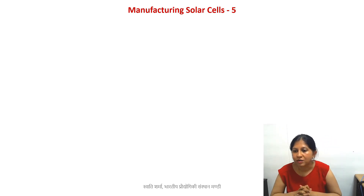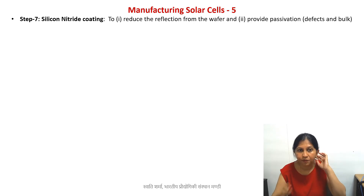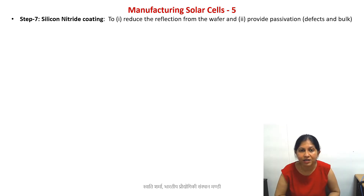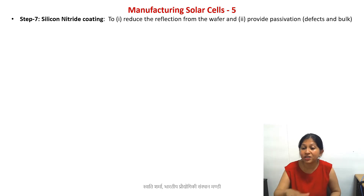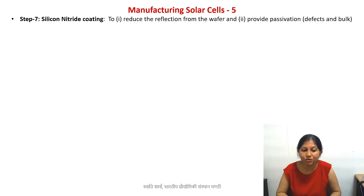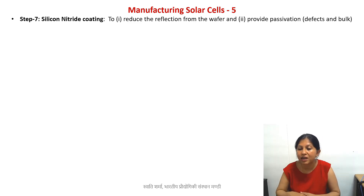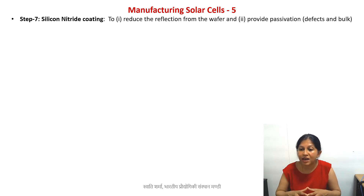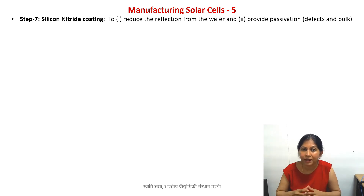We move on to our next topic: silicon nitride coating. This is the next step in solar cell manufacturing. Once we create the N layer, we need a passivation layer on top of the entire wafer. This passivation layer is the silicon nitride layer — a thin layer of this material is coated on top of the wafer.